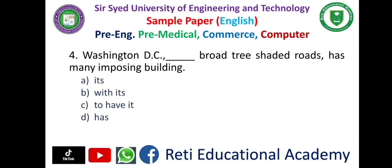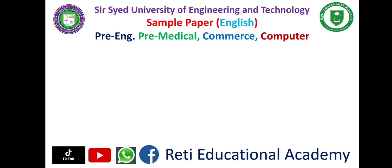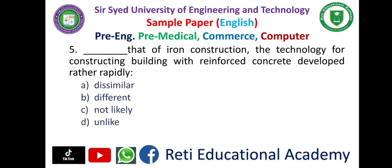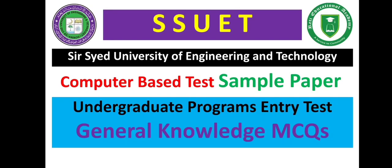Question number four: 'Washington DC ___ broad tree-shaded roads has many imposing buildings.' A. It's, B. With it is, C. To have it, D. Has. The correct answer is B: with it is. Question number five: '___ that of iron constructions, the technology for constructing buildings with reinforced concrete developed rather rapidly.' A. Dissimilar, B. Different, C. Not likely, D. Unlike. The correct answer is D: unlike.